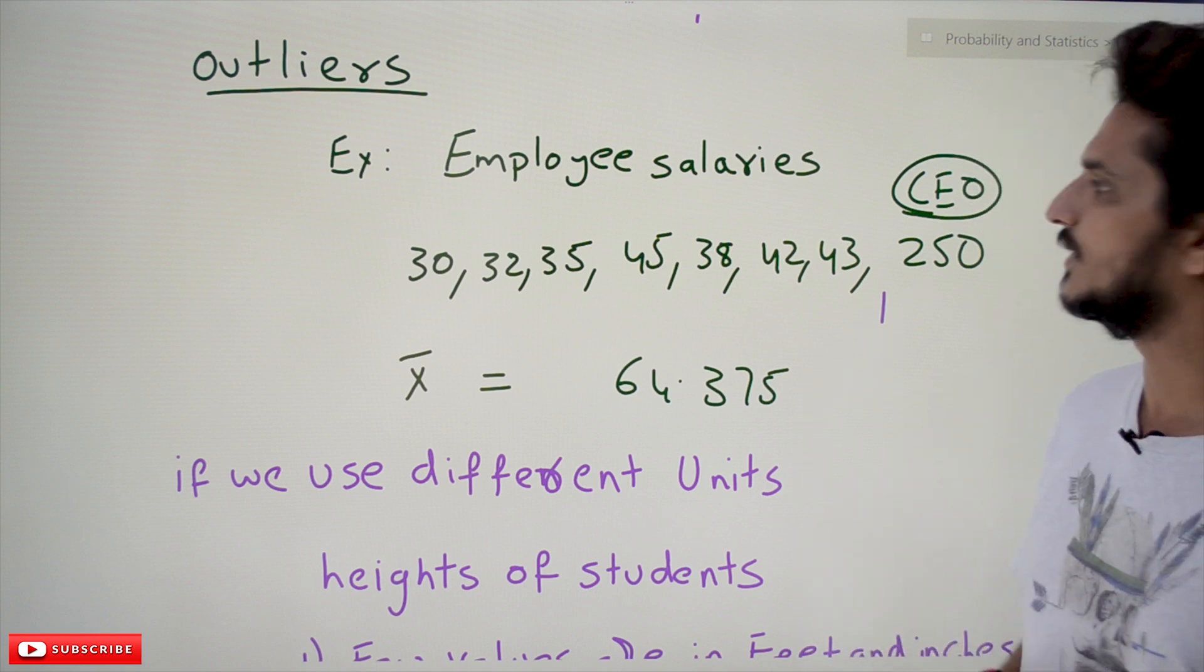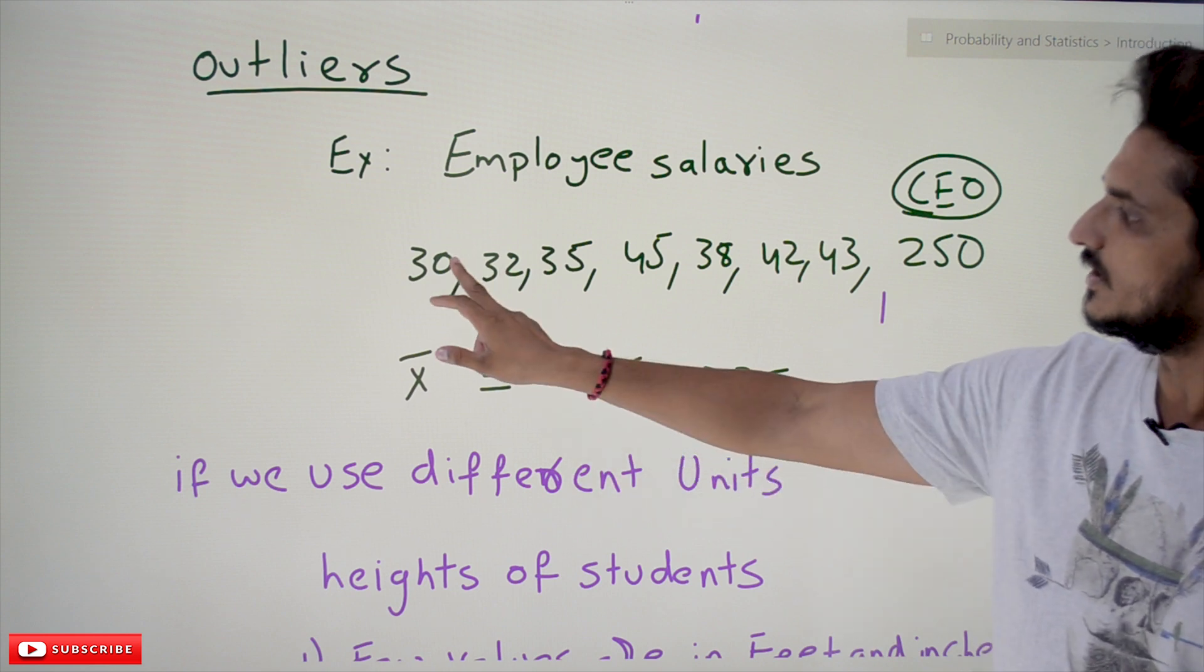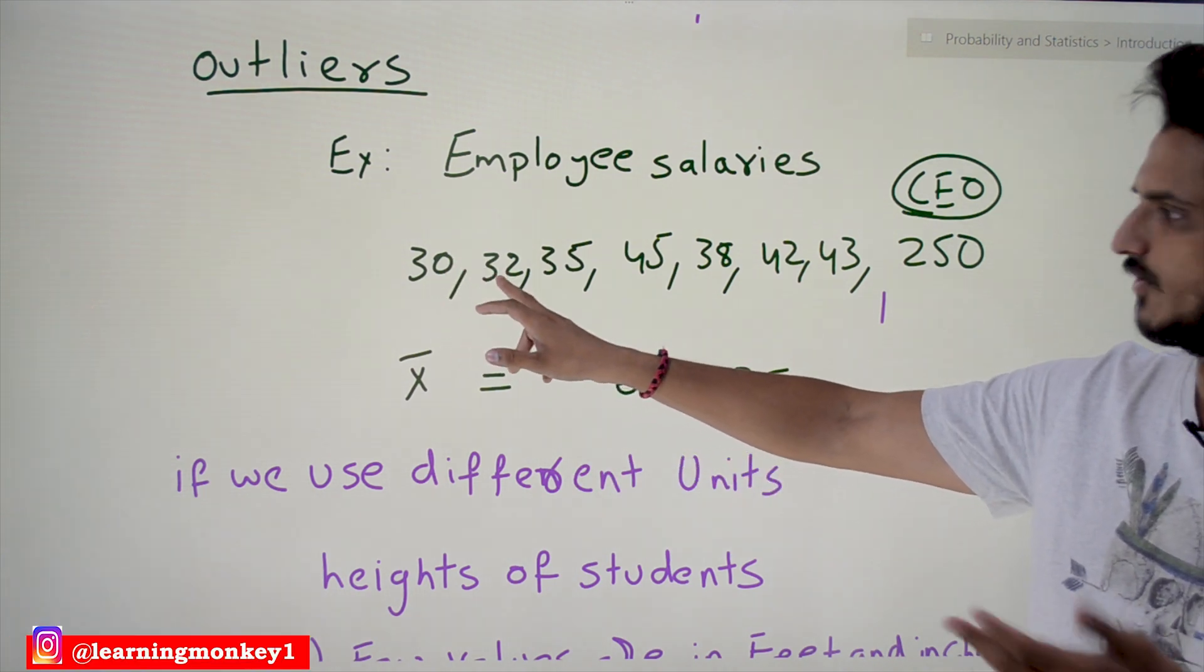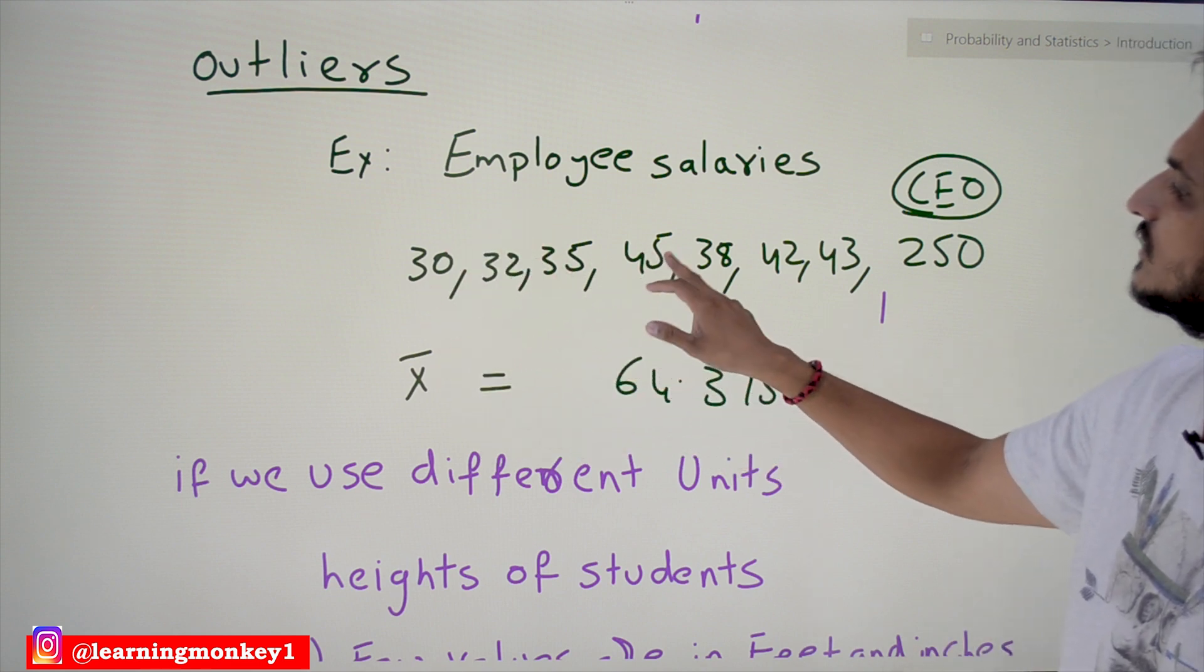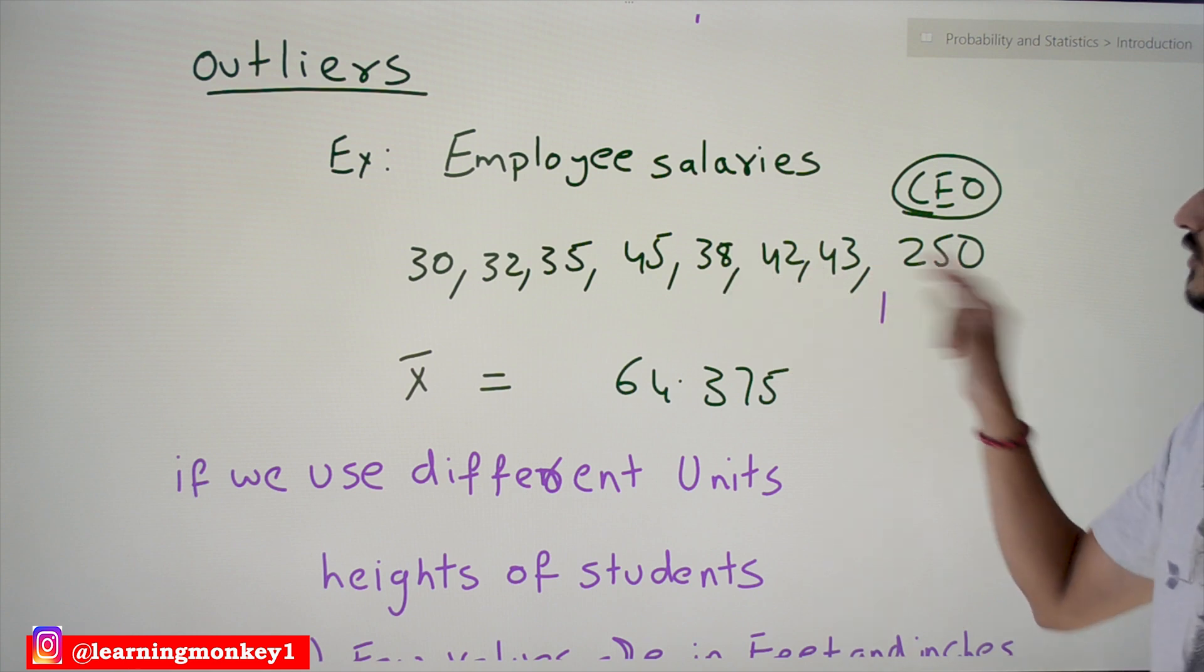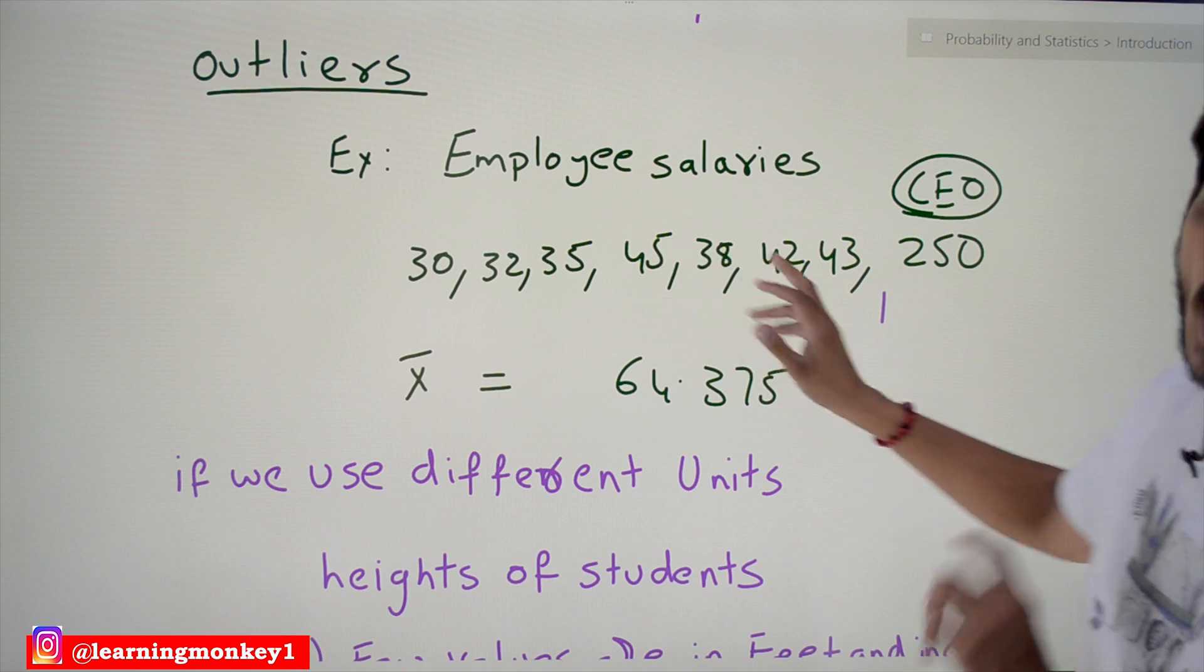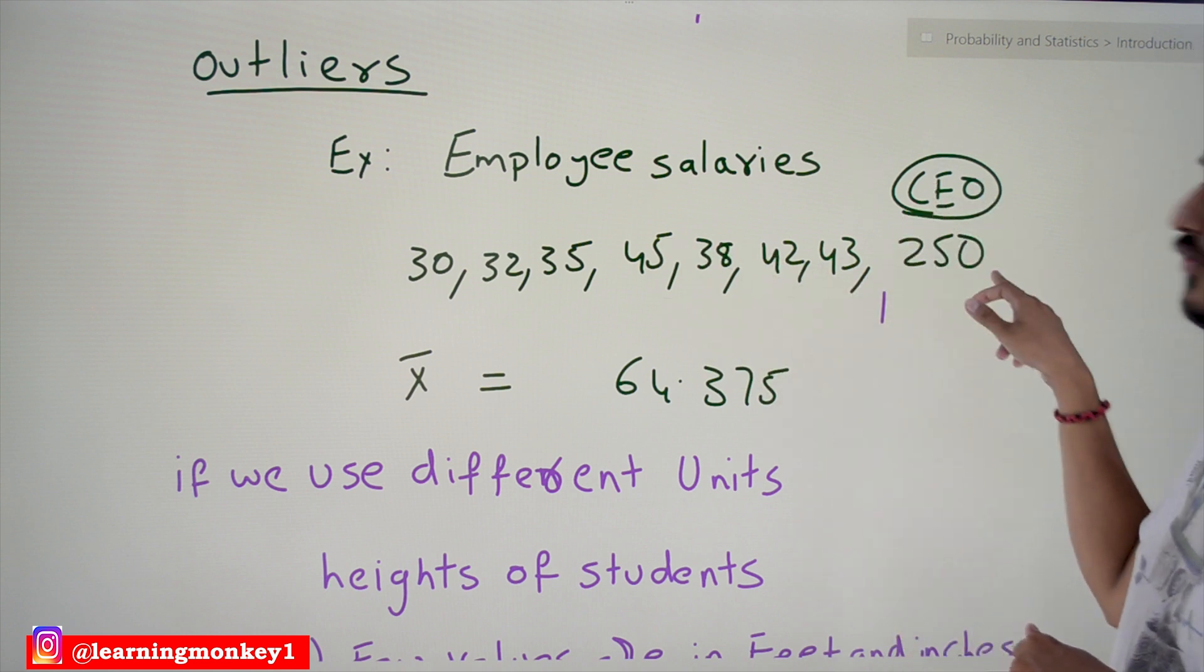First we will understand what outliers means with an example. Employee salaries are taken. These are taken in 30k, means 30,000 per month or one year. If you take it as 30k per year: 30,000, 32,000, 35,000, 45,000, 38,000, 42,000, 43,000. If you add along with the salaries, if you add the CEO salary, CEO is having 250k per year.